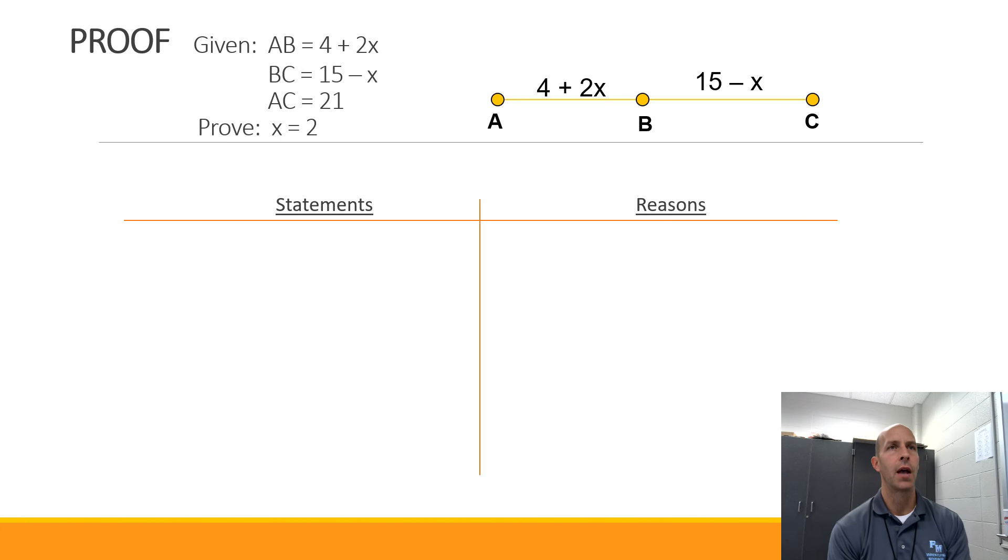Notice I've got a line segment drawn here with a couple of points, and I'm giving the fact that AB's length is 4 plus 2x, and BC's length is 15 minus x. It's also known that AC's length is 21. Our job is to prove that x is equal to 2.